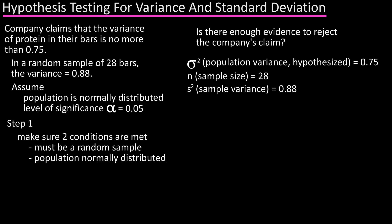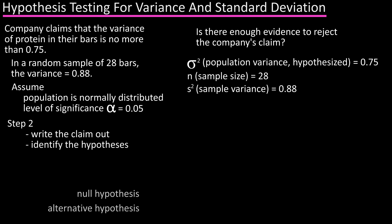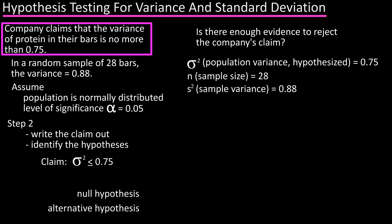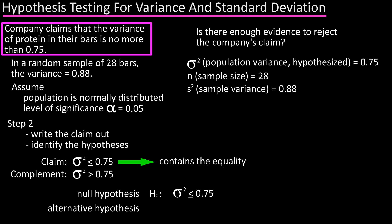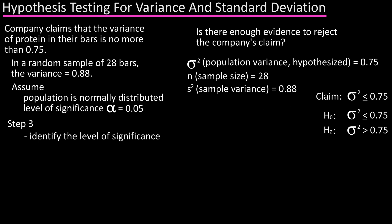Step one is to make sure the conditions are met to use the chi-square test. It is stated that the sample is a random sample, and it was also stated that the population is normally distributed, so we're good to go. Step two is to write out the claim and identify the null and alternative hypotheses. The claim is that sigma squared, the population variance, is less than or equal to 0.75. The null hypothesis is H₀: sigma squared is less than or equal to 0.75. The alternative hypothesis is Hₐ: sigma squared is greater than 0.75. Step three: the level of significance is alpha equals 0.05.